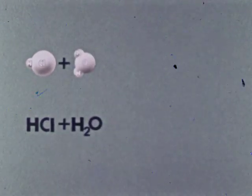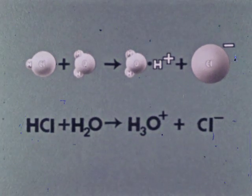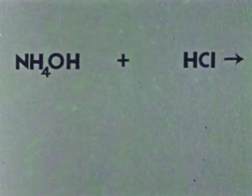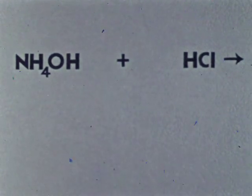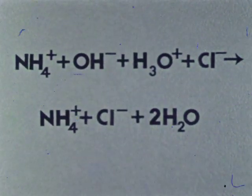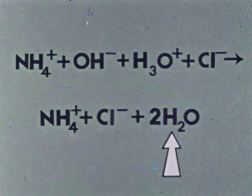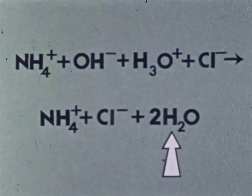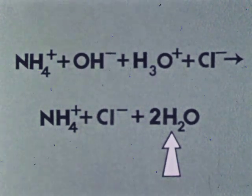The hydronium ion explains why hydrogen chloride doesn't conduct electricity until it is dissolved in water, and the dissociated hydronium ion and the chloride ion form. This concept helps explain the reaction between ammonium hydroxide and hydrochloric acid. The dissociated substance, water, is formed. This is an example of the expanded Arrhenius theory, which is still used to introduce students to acid-base reactions.